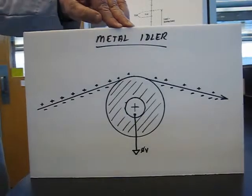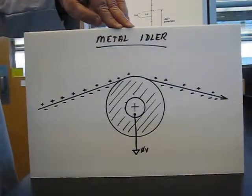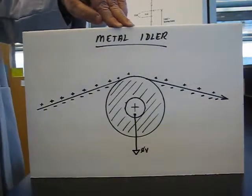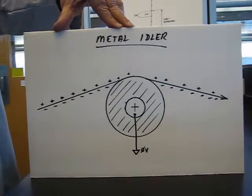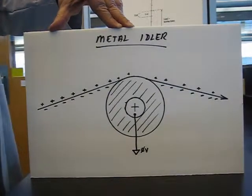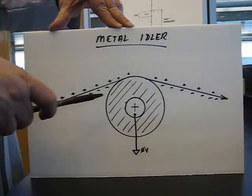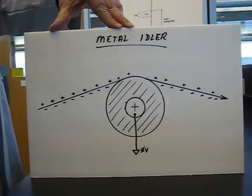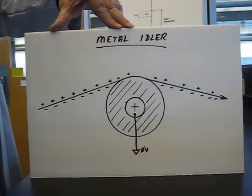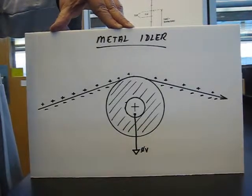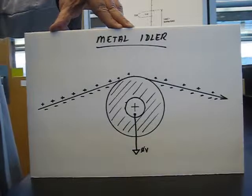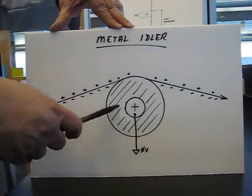Well the question is can rollers actually remove static from webs and basically the answer is no in most cases. Now you would think on our resistance chart that if we move to more and more conductive materials that they should be able to take off more static.